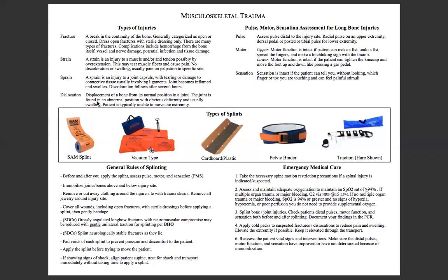Dislocation is a displacement of bone from its normal position in a joint. The joint is found in an abnormal position with an obvious deformity and usually swelling. The patient is typically unable to move the extremity.